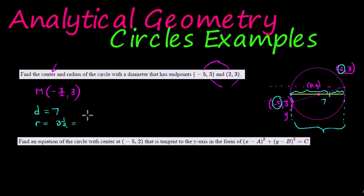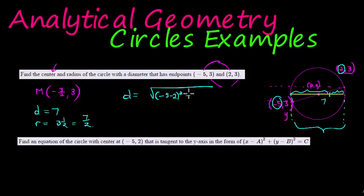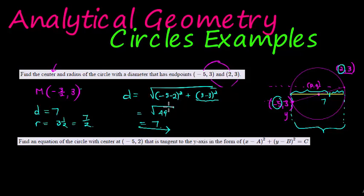The diameter is seven, which means the radius is seven over two — three and a half. But if you did not recognize that, no problem. Using the distance formula: negative five minus two squared plus three minus three squared gives us negative seven squared which is 49, plus zero. The square root of 49 is simply seven — the diameter. The radius is then half of that.